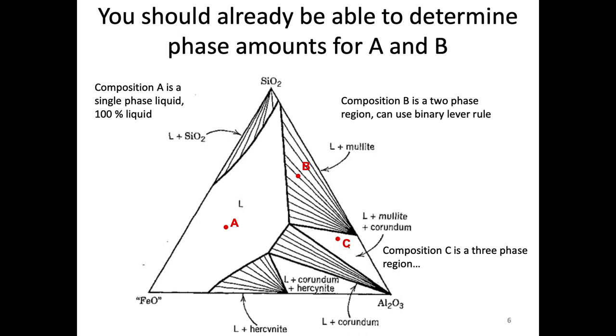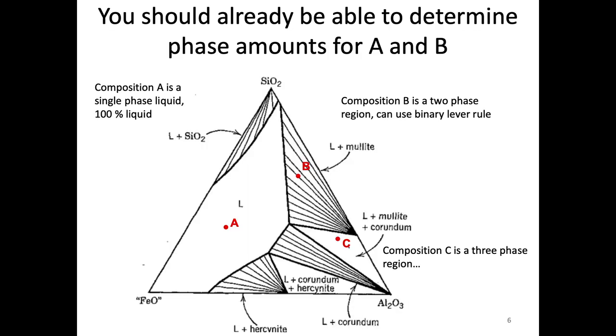I recommend going back to review the binary lever rule if you're a little fuzzy on it. For composition C, we're now in one of those regions identified as having three phases. In our toolbox from binary systems, we don't have a tool for calculating phase amounts in three-phase equilibrium. The tool to do that is the ternary lever rule.